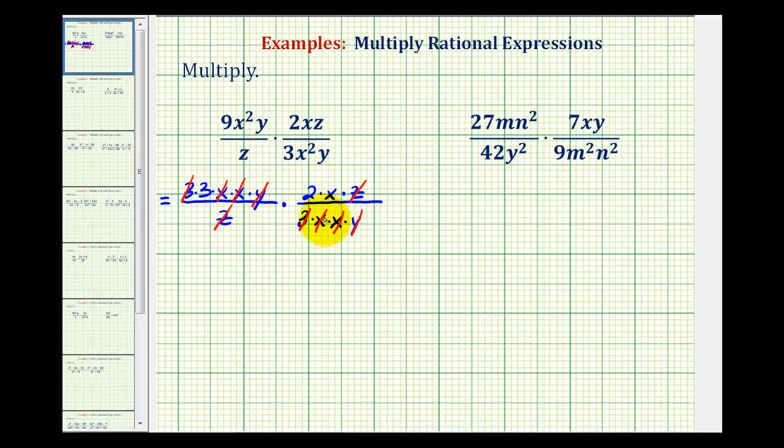So now what's left would be our simplified product. Notice in the numerator we have three times two times x, that would be 6x. The denominator just contains factors of one, 6x over one is just 6x.